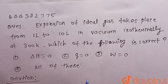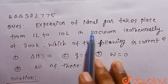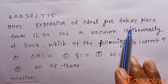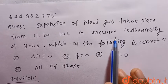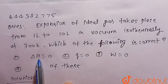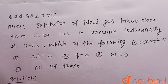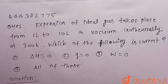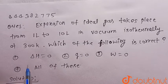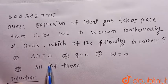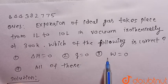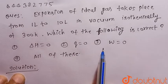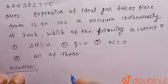Hello everyone. Consider the given question: expansion of an ideal gas takes place from 1 litre to 10 litres in vacuum, isothermally at 300 Kelvin temperature. Which of the following is correct? Option 1: delta H = 0, Option 2: Q = 0, Option 3: W = 0, Option 4: all of these.